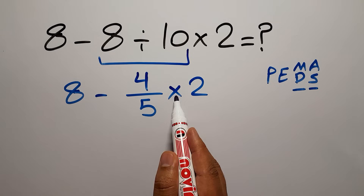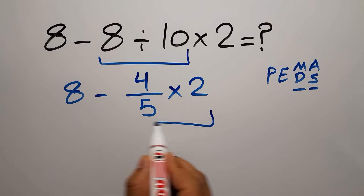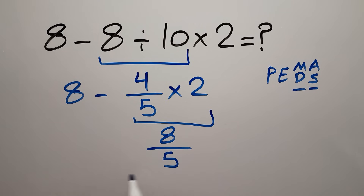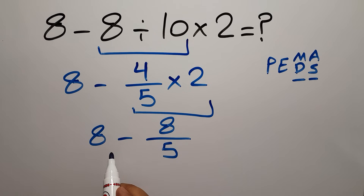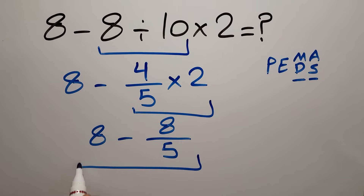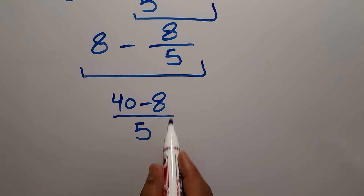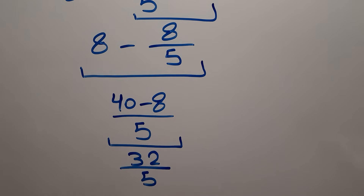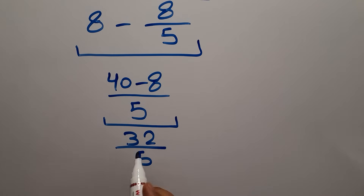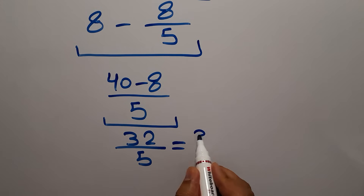4 times 2 gives us 8, so 8 over 5. Now we have 8 minus 8 over 5. We can write 8 as 40 over 5, so 40 over 5 minus 8 over 5, which gives us 32 over 5.